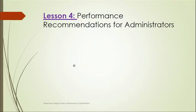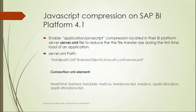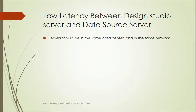Now let's look at performance recommendations for administrators. The first is JavaScript compression on SAP BI Platform 4.1. There is a server.xml file used to reduce file transfer size during the first-time load of the application. This file is available in the conf folder of the server. We need to enable it by adding the required line in the connection XML element. Additionally, the Design Studio server and data source server should be on the same location or data center and the same network to avoid latency issues.